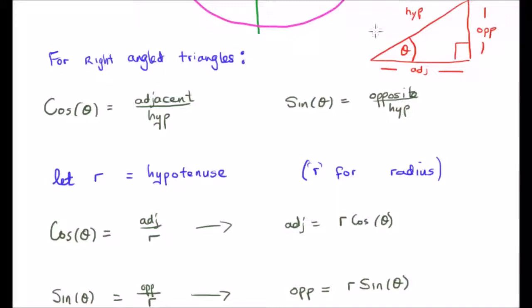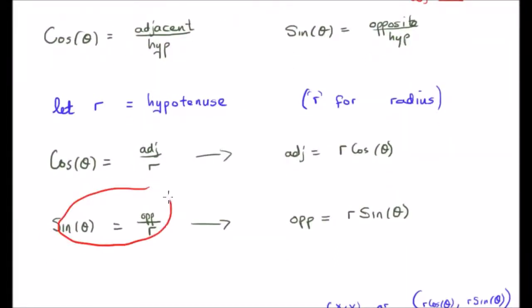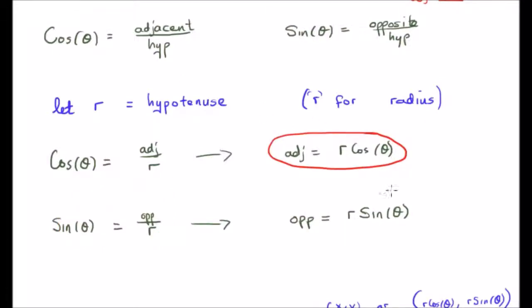The hypotenuse is up here. For reasons you'll see in a moment, I'm going to define the hypotenuse as R. So instead of the hypotenuse, I'm going to write R. For this reason, we can say that cosine theta is the adjacent side divided by R, and sine theta is the opposite side divided by R. If we rearrange these, we find that the adjacent side is R cos theta, and the opposite side is R sine theta.